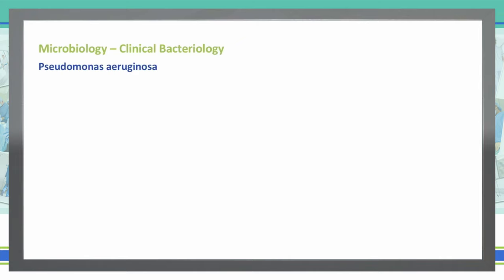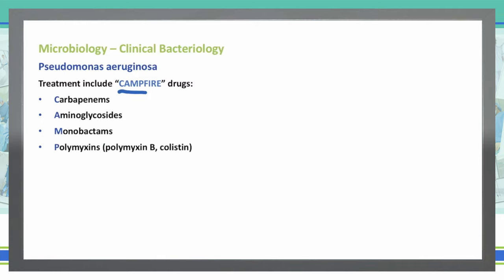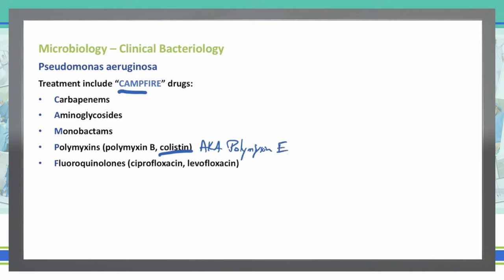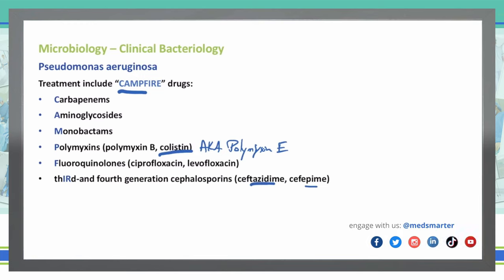We're going to treat Pseudomonas with CAMPFIRE drugs — another mnemonic. C is carbapenems. A is aminoglycosides. M is monobactams. P is polymyxin B or colistin, also known as polymyxin E. F is fluoroquinolones, like ciprofloxacin or levofloxacin. I and R together represent third- and fourth-generation cephalosporins — ceftazidime and cefepime are two of your main ones that work very well for Pseudomonas. And finally, E is extended-spectrum penicillins like piperacillin and ticarcillin.